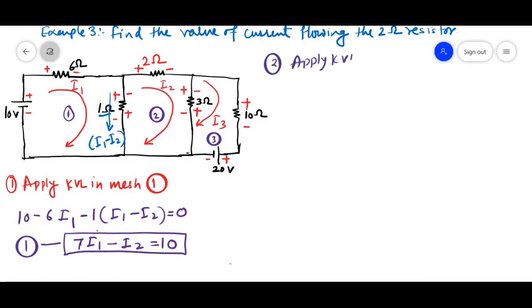Second, apply KVL to mesh 2. For mesh 2, mesh current, we will write I2 minus I1. This will be minus 1 times I2 minus I1 minus 2 I2. For resistor 3 ohm, we will write this current as I2 minus I3.